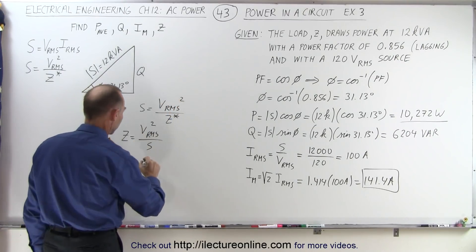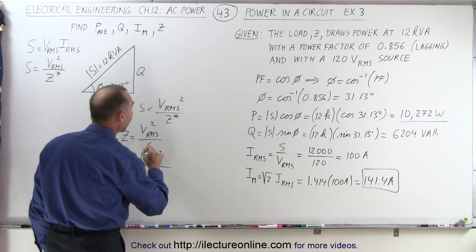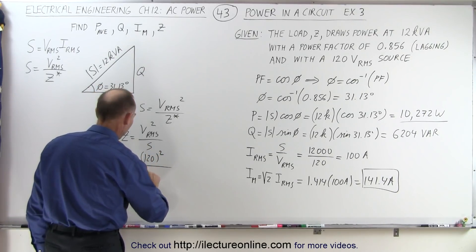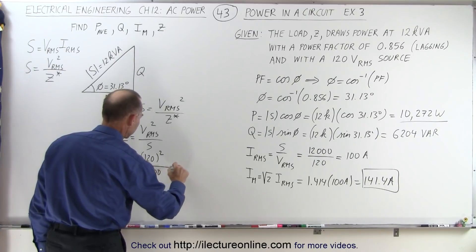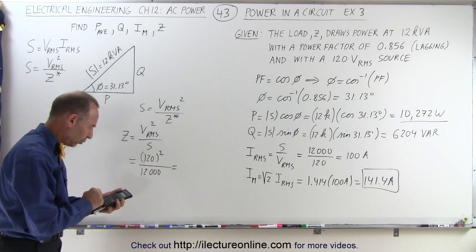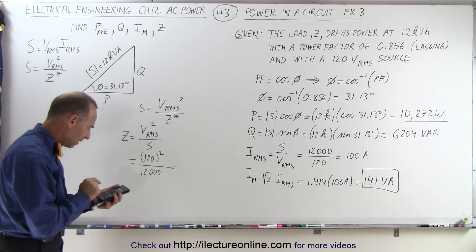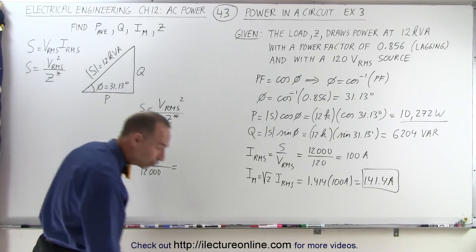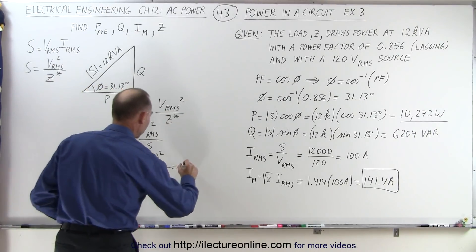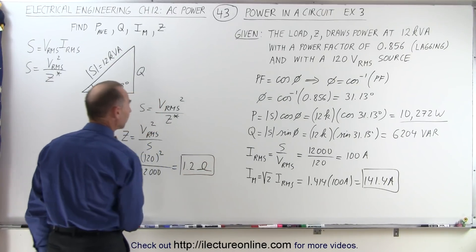In this case, that would be 120 volts squared divided by 12,000. So 120 squared divided by 12,000 equals 1.2, and that of course would be ohms. So now we have the impedance.